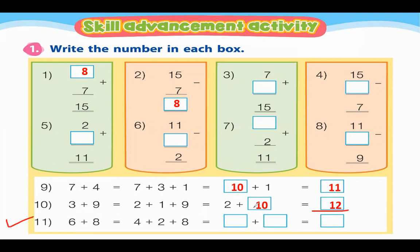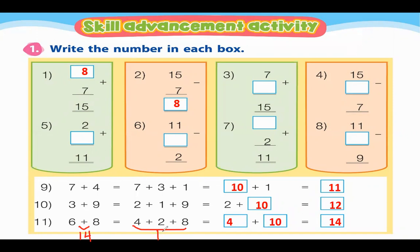Number 11: 6 plus 8 equals 4 plus 2 plus 8. So 6 plus 8 equals 14. And 4 plus 2 plus 8 equals 14, and 4 plus 10 also equals 14. So the result is 14. That's it, students. This is your homework — please answer it.